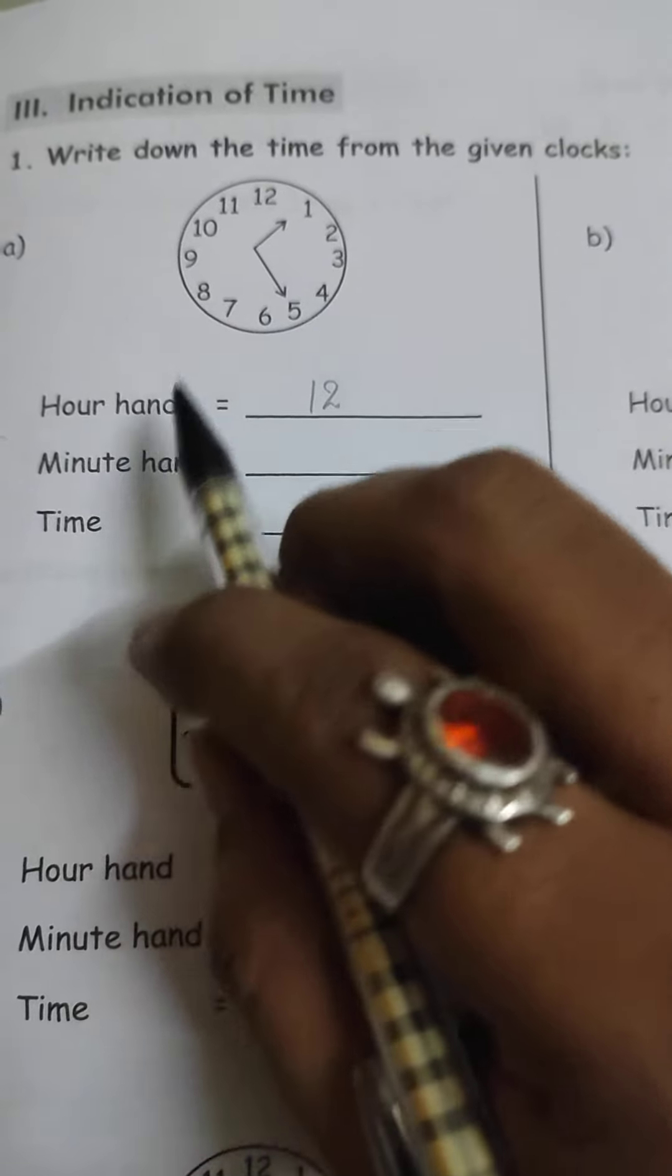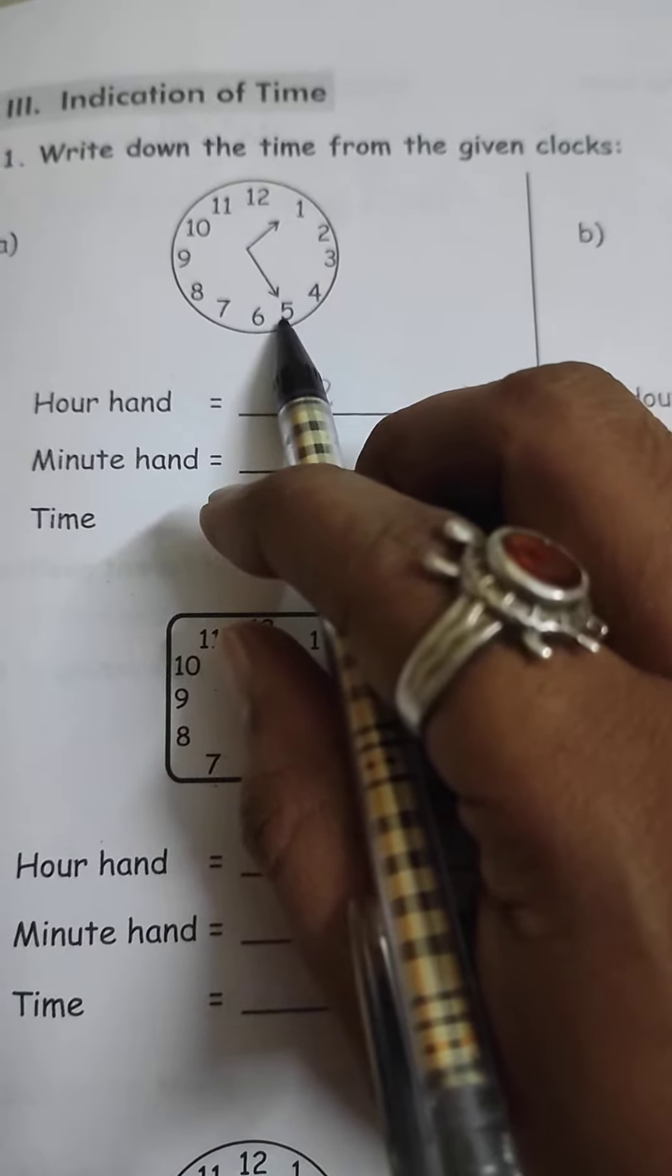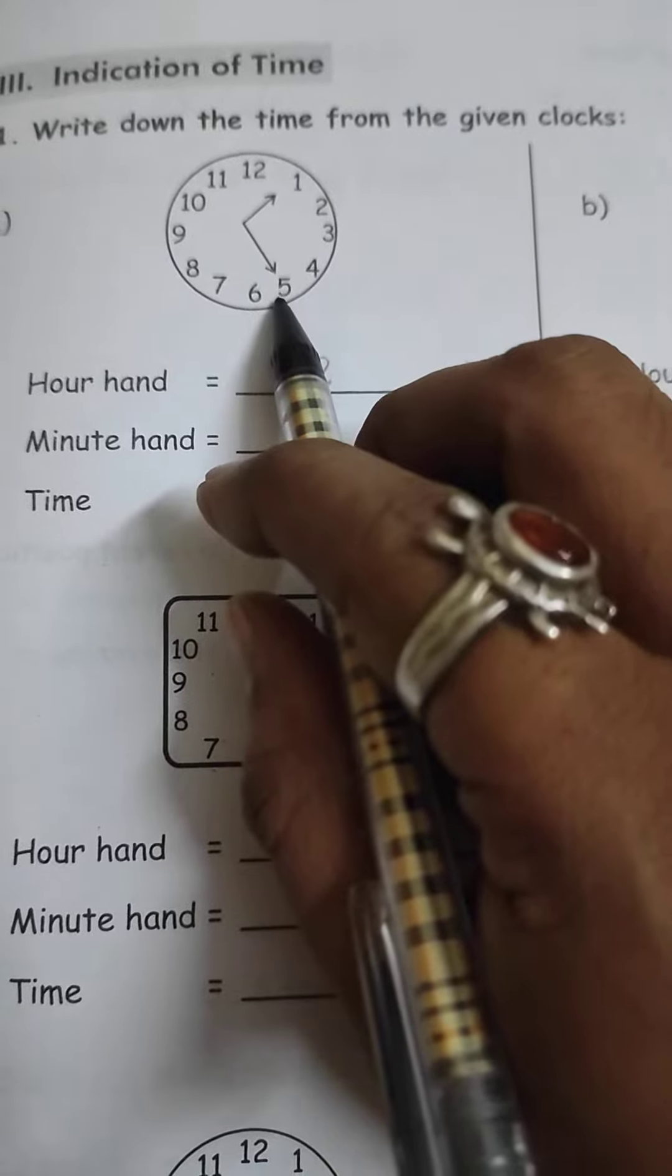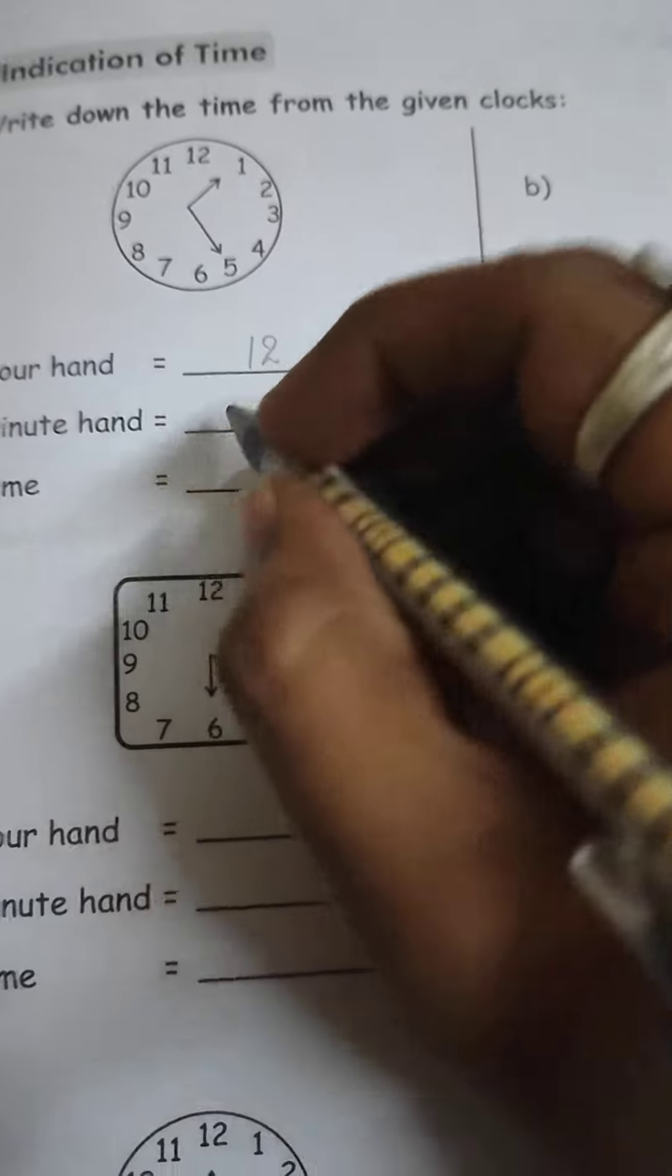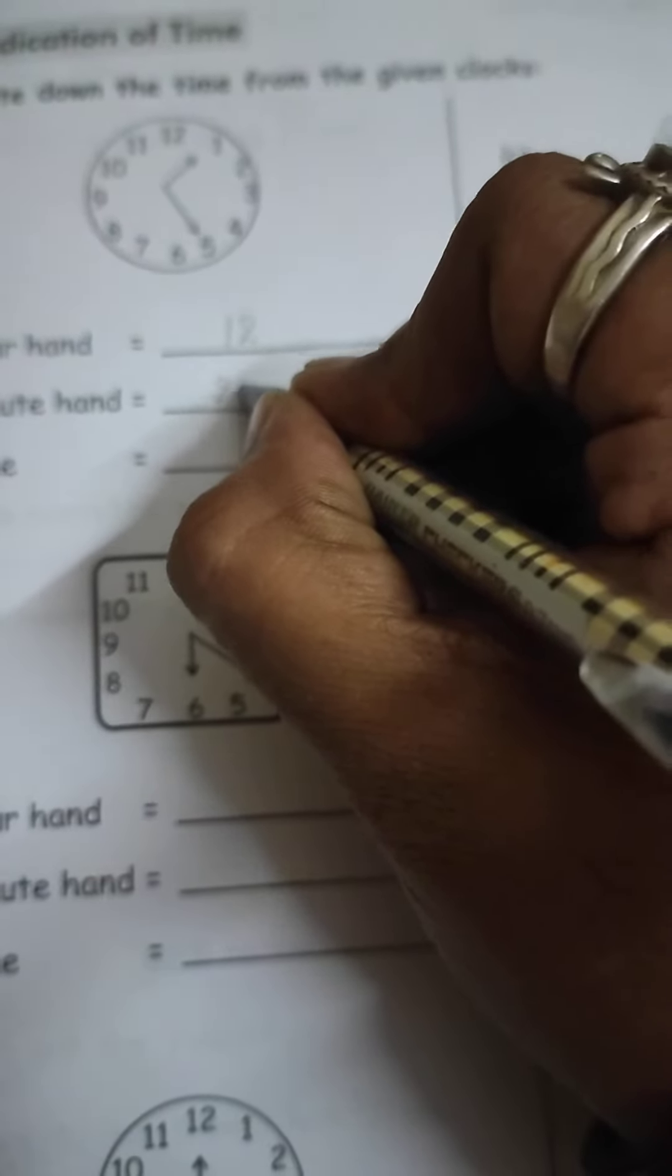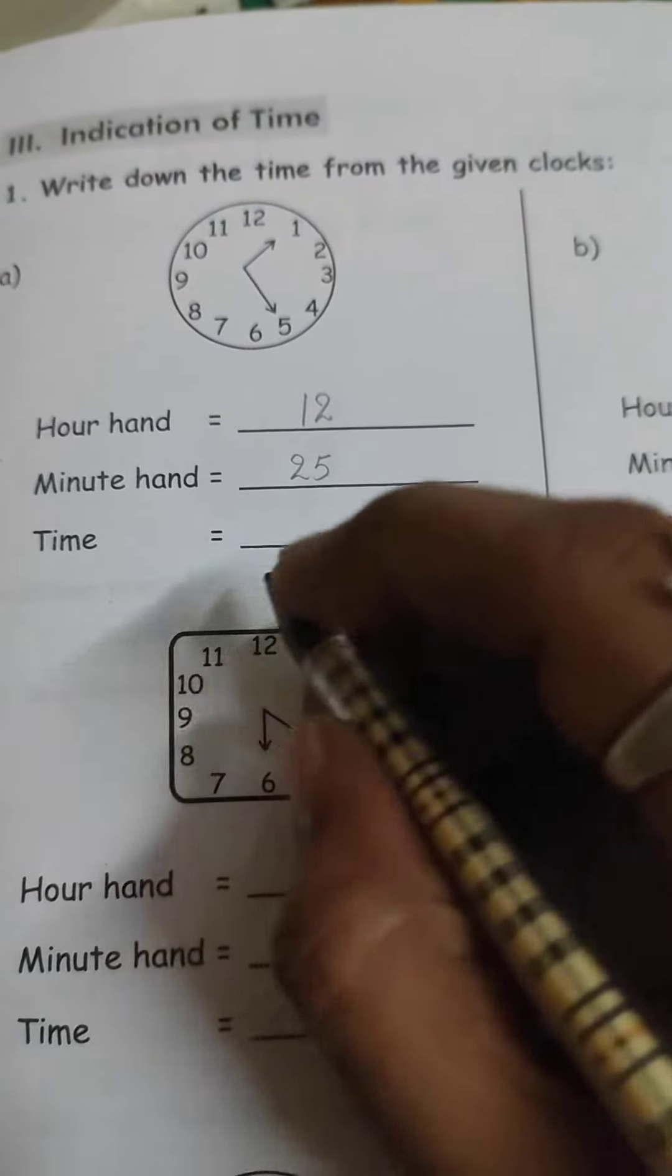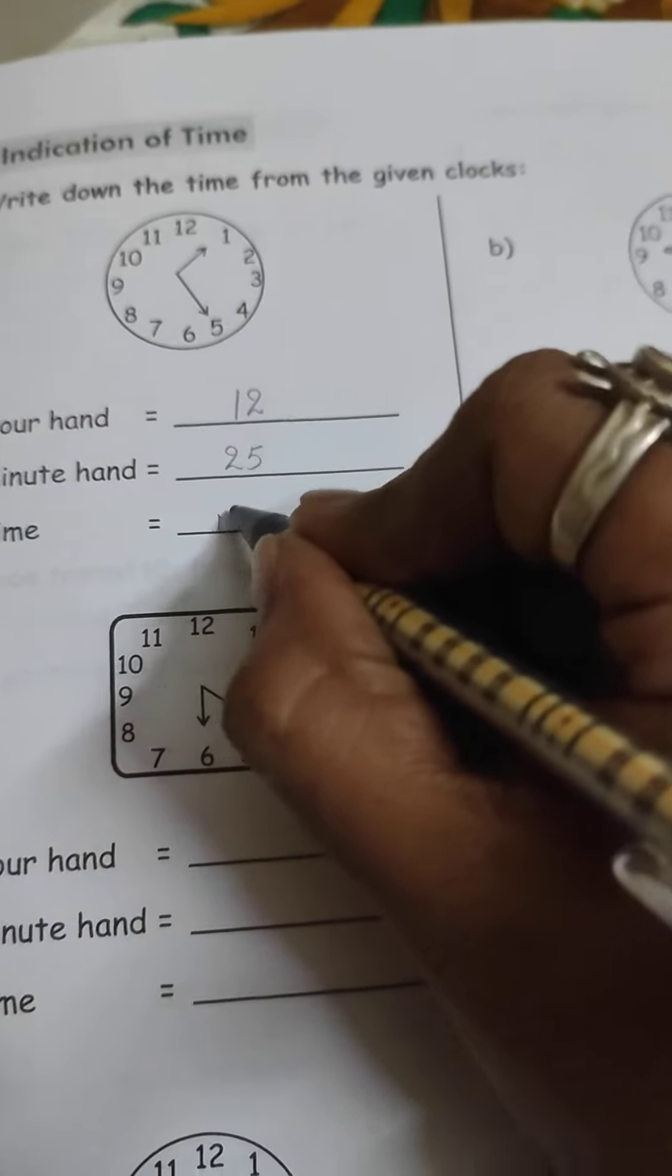Now, you have to observe the minute hand. It is at number 5, which means multiplication of 5. 5 times 5 is 25. So what is the time now? 12:25.